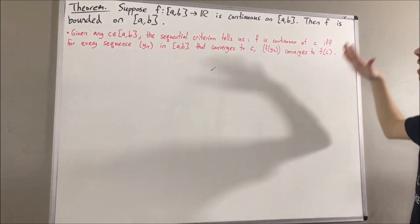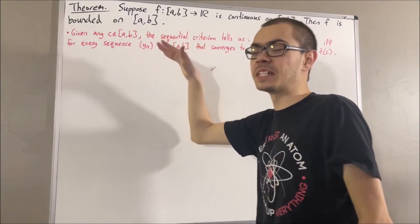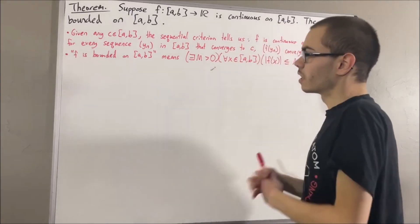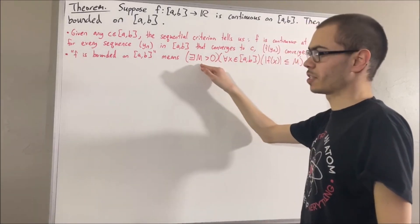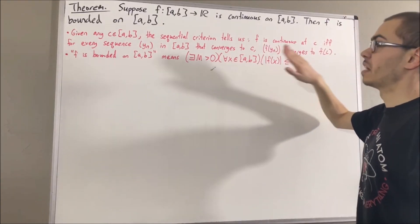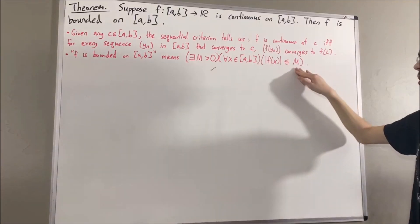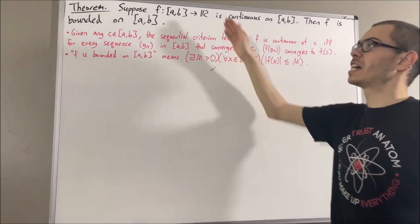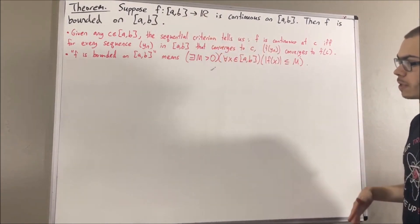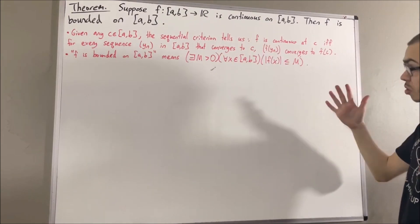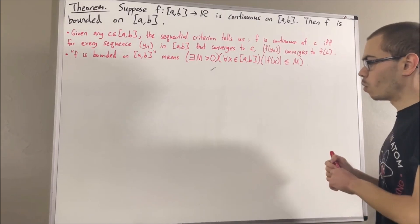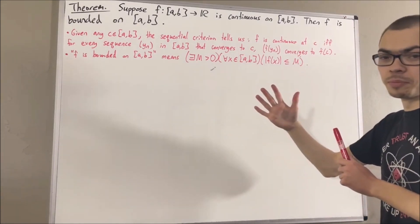Now, to say that f is bounded on a, b means that there exists a positive real number, capital M, such that for all x in a, b, the absolute value of f(x) is less than or equal to capital M. So the absolute value of every output value of this function is less than or equal to capital M. Now, we're also going to be using a lot of properties about convergent sequences.